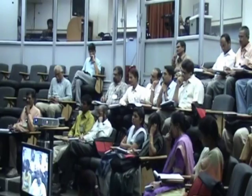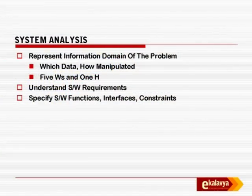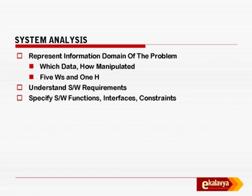There is a very fundamental step. Today in the second session this is what you are going to do with the fellow who acts as end user — you have to ask questions: what is required, why is it required, where is it required, who requires it, and then how it is to be done. These questions will get information which can be represented as the information domain. You understand software requirements at this stage, and finally you specify software functions, interfaces, and constraints — all of which form part of the software requirements specification document.